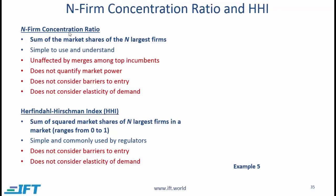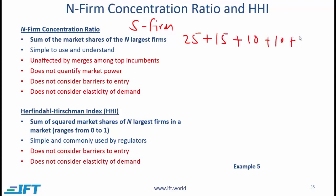The N-firm concentration ratio is simply the sum of the market shares of the largest N firms. For example, if we take the five-firm concentration ratio in a given industry, we take the market shares in percentage terms. If the biggest company has a 25% market share, the second has 15%, and then 10%, 10%, and 10%, then the five-firm concentration ratio would be 70%. This is fairly simple to use and easy to understand, and that is the major advantage of the N-firm concentration ratio.